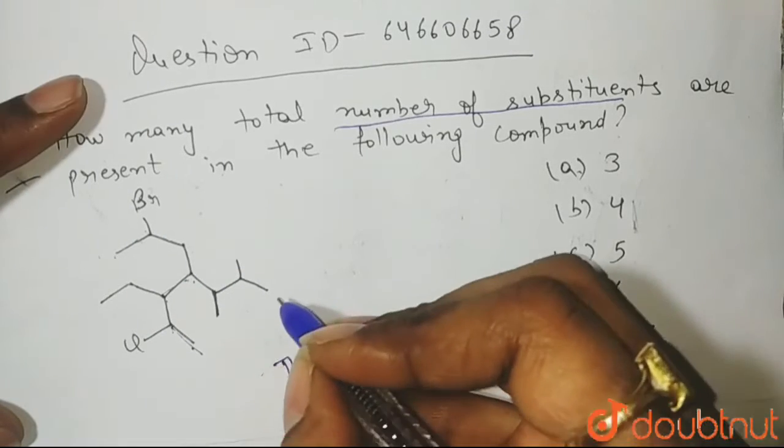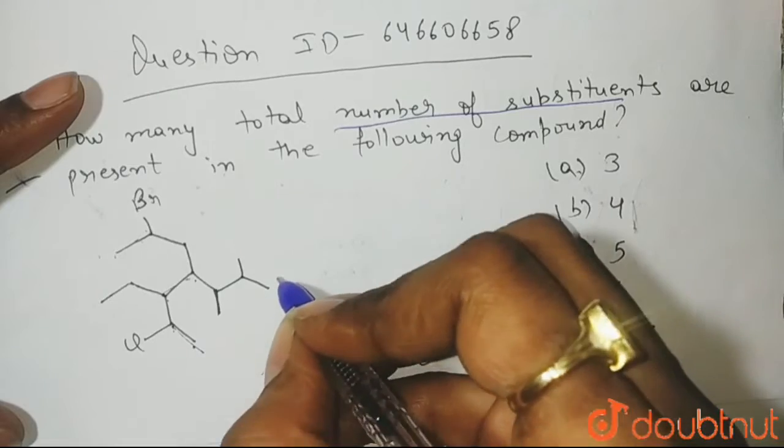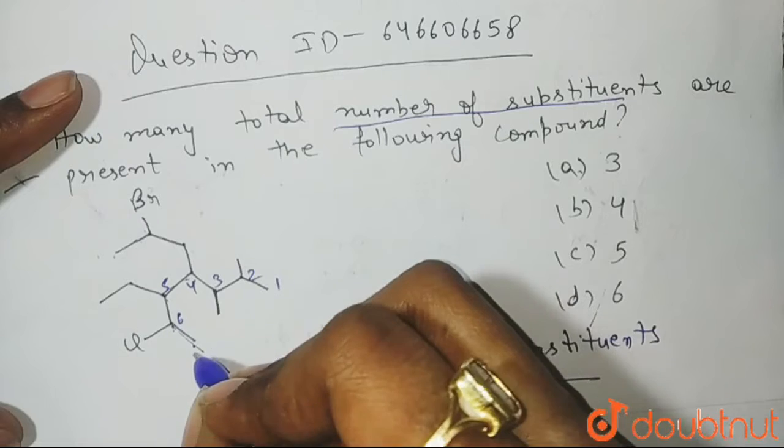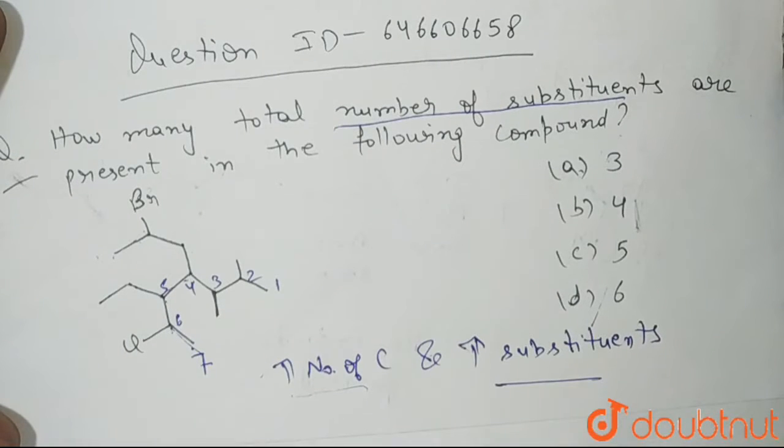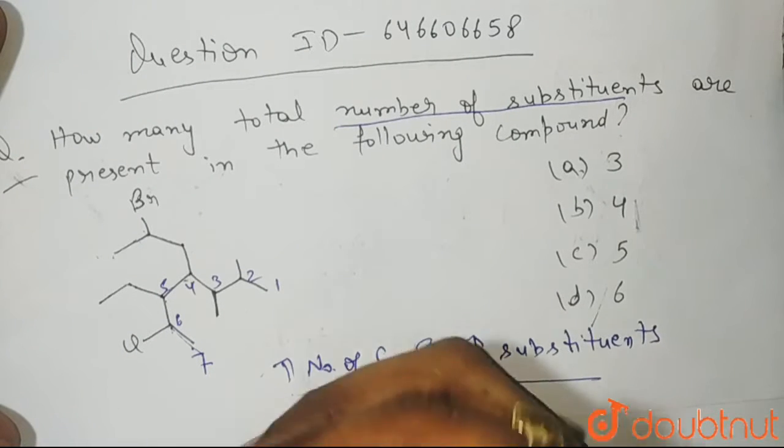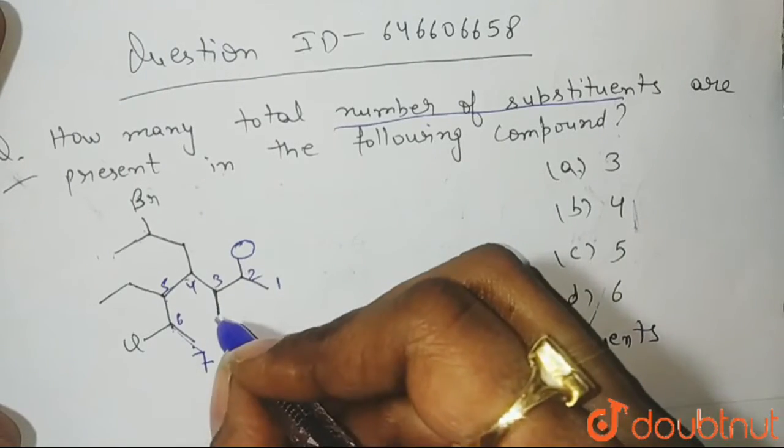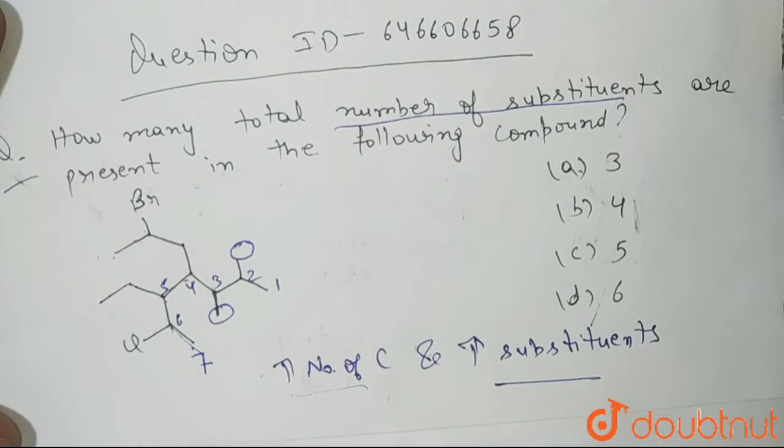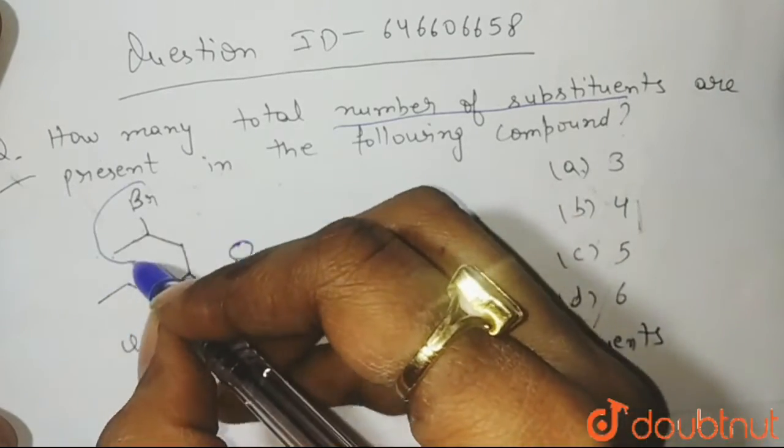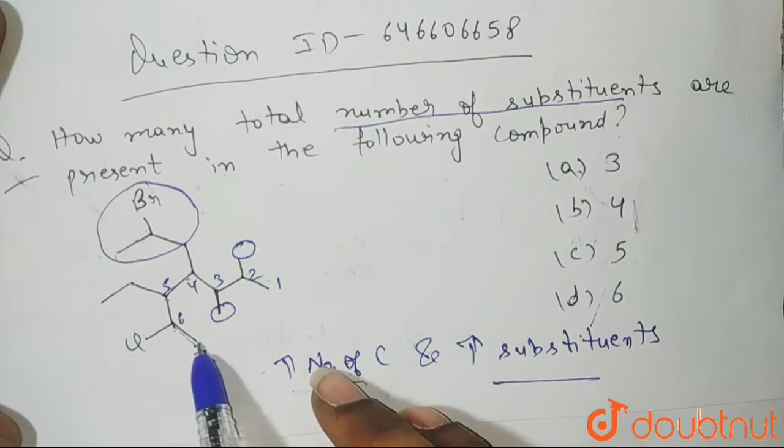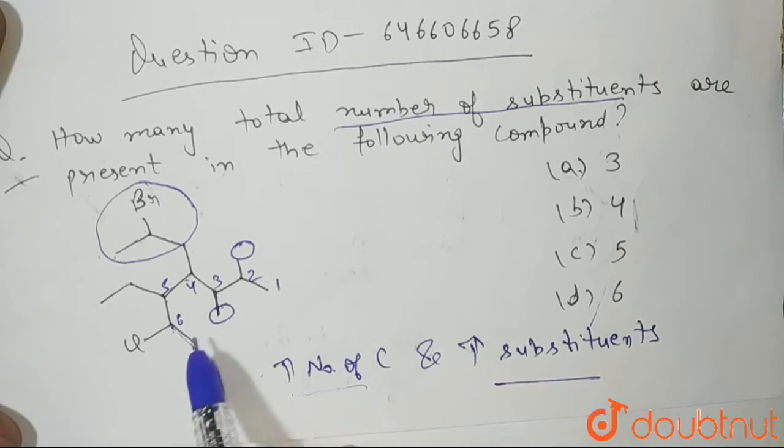But if we take this chain like this: 1, 2, 3, 4, 5, 6 and 7. Again we have 7 number of carbon atoms but let's count the substituents present on it. Substituent 1 present here. Here also substituent is present. This is the substituent present. This is the chain, this is the parent chain that we are taking.